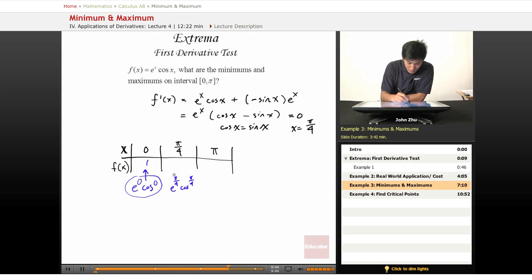We know that this is 1.55, and at pi, e to the pi cosine of pi, we get negative 23.14.